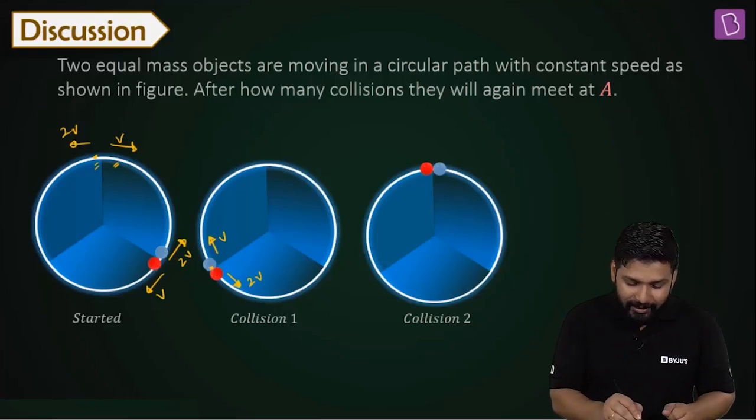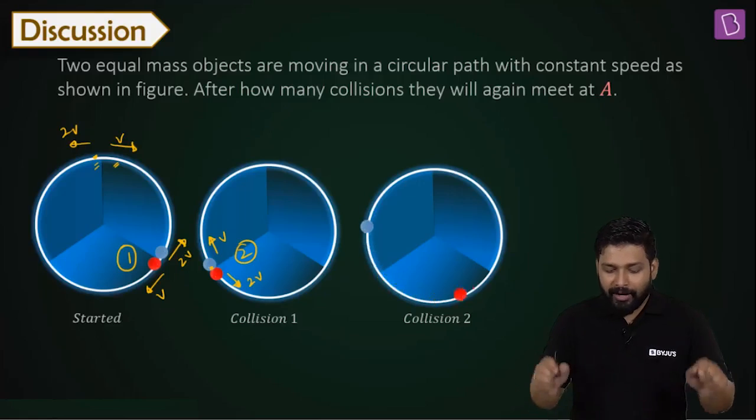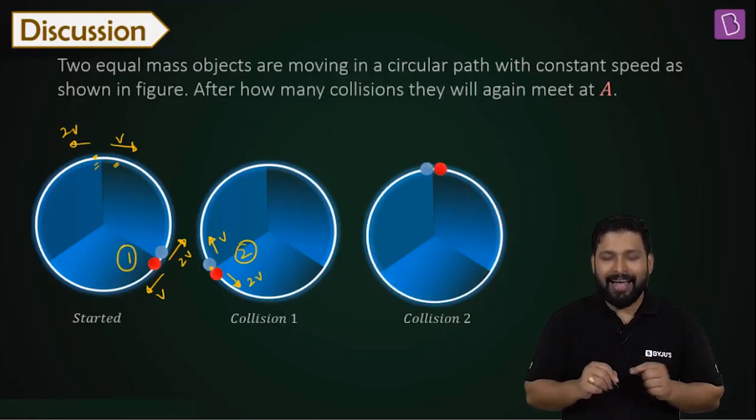How many collisions we have counted? One collision. Two collisions. Is there any more? So the first collision happened over there. Velocities got exchanged. Now again got exchanged. Now red one has 2V. And they meet at point A.